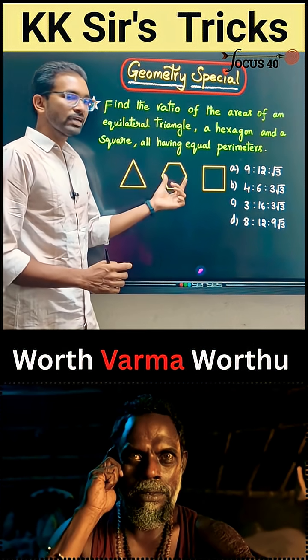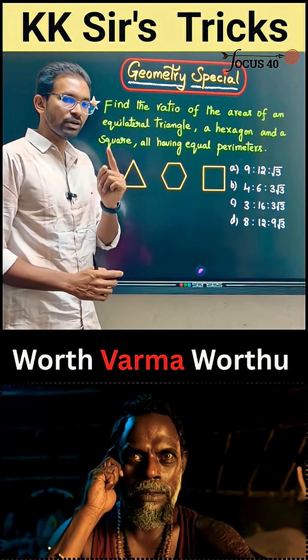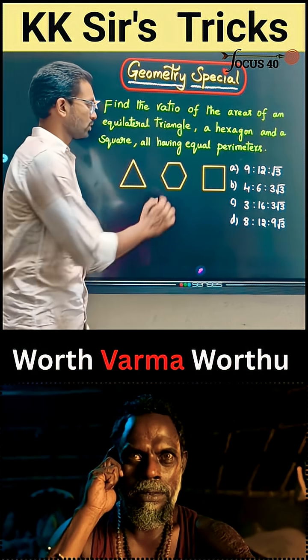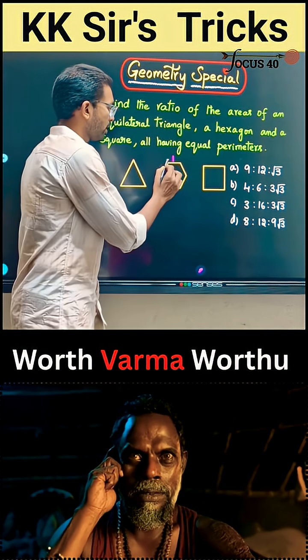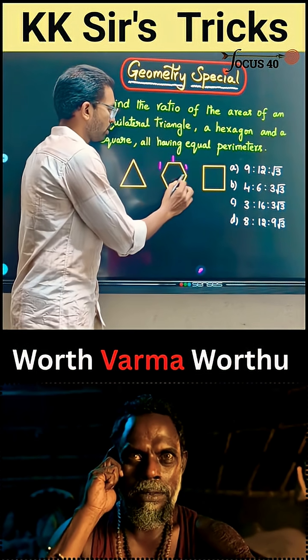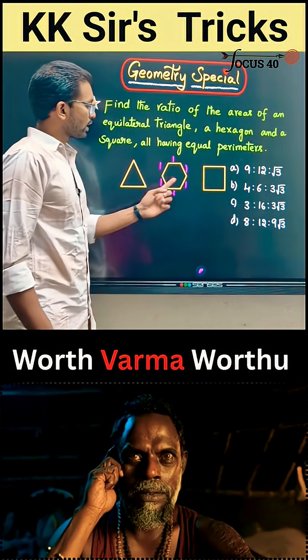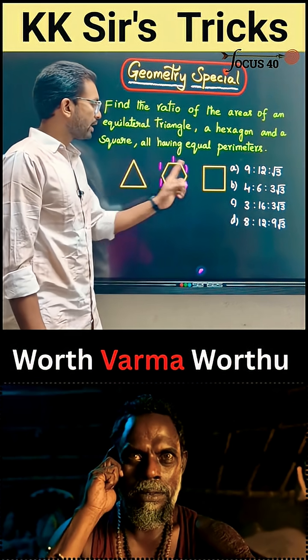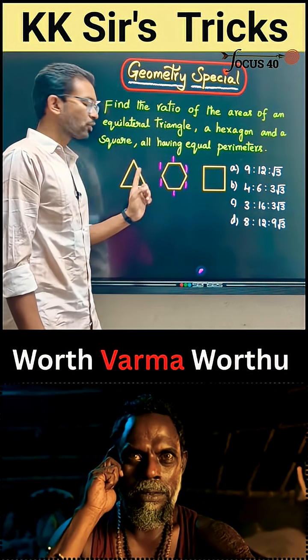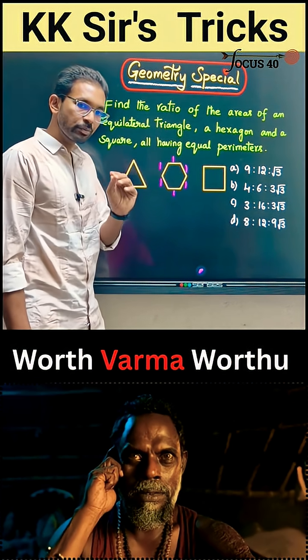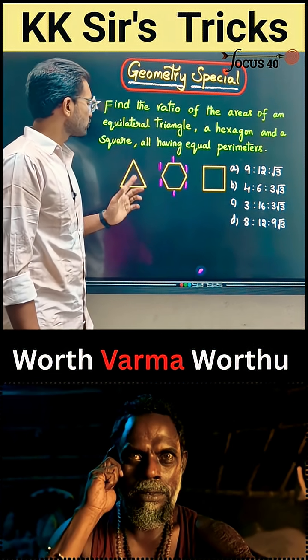Let us say each side of the hexagon is 1 centimeter. So the hexagon has sides 1, 1, 1, 1, 1, 1 — giving a perimeter of 6 centimeters. All three figures share this same perimeter of 6 centimeters.